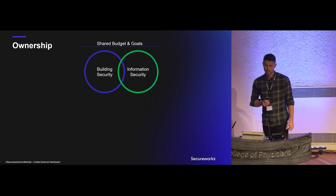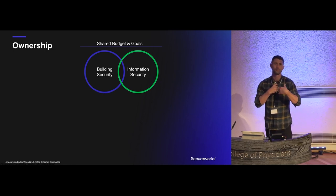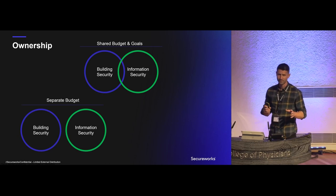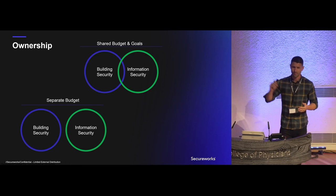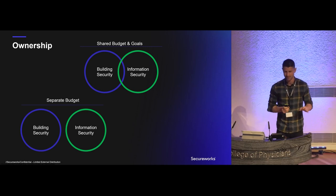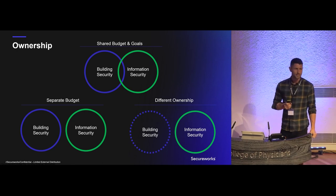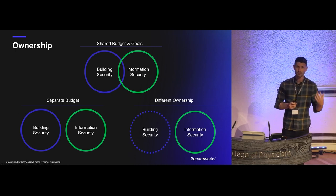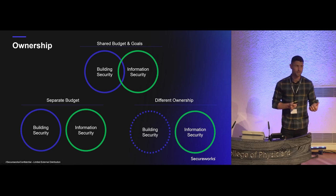The third reason is ownership. We'd like to think physical building security and information security departments work hand in hand, since both protect the company's digital assets. But in practice, they have their own agendas and aren't interested in sharing budgets. Information security focuses on digital assets; building security focuses on physical security — and they rarely collaborate. In a multi-tenant building, physical security is managed by a third party who may not provide authorization for physical breach testing at all.